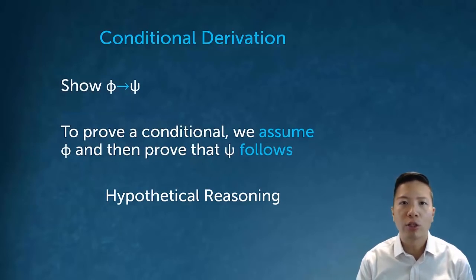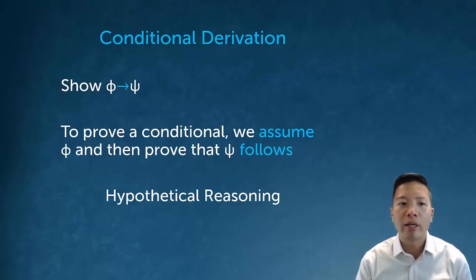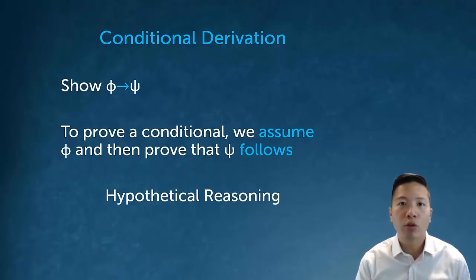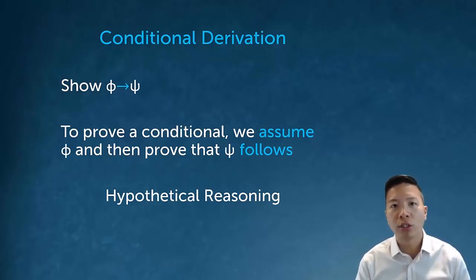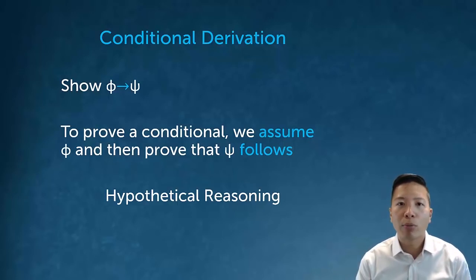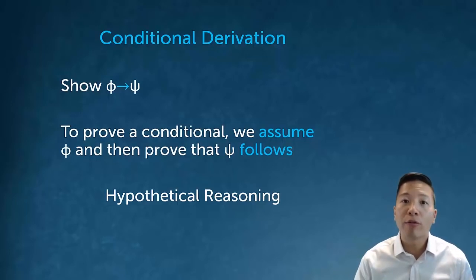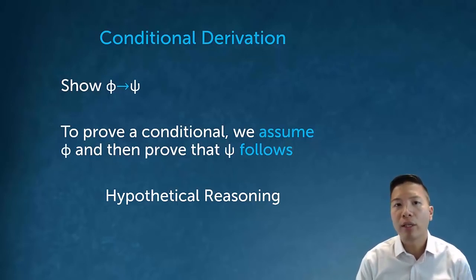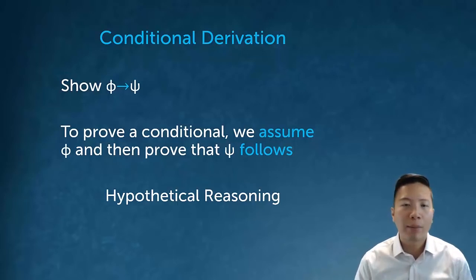A conditional derivation we use when we're trying to show a statement of the form phi arrow psi — basically when the conclusion we're trying to draw is a conditional statement. The way we prove a conditional is by assuming that the antecedent is true, and then we want to prove that under that assumption the consequent actually follows. This type of reasoning happens all the time and is often called hypothetical reasoning.